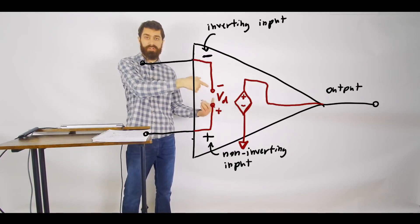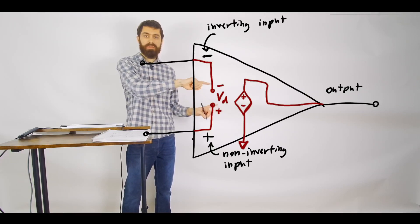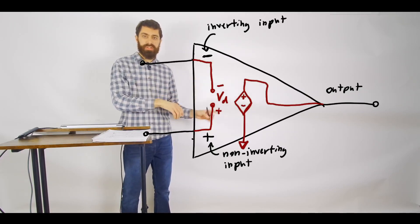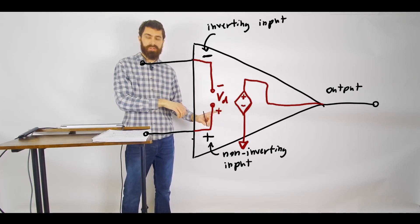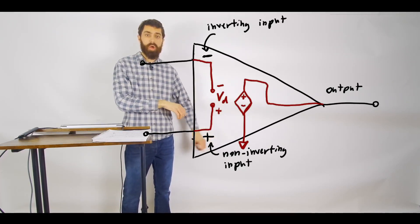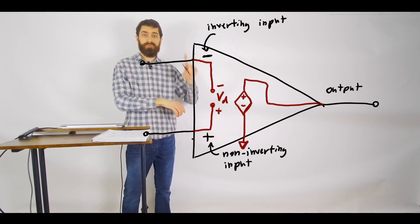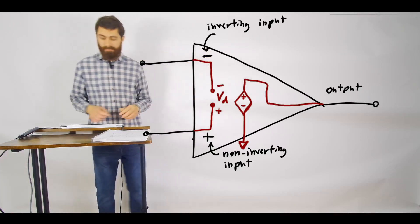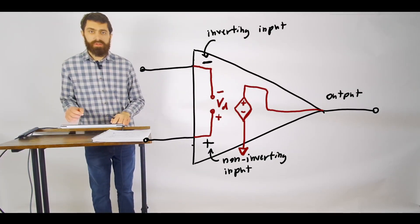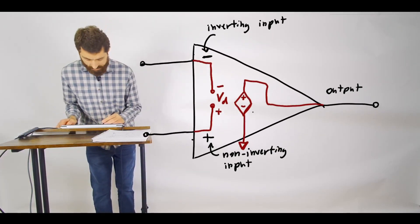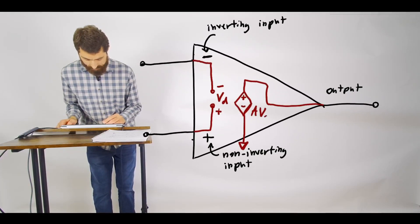And this plus and minus is actually referring to a voltage. It's a voltage across this open circuit here. And you always, whenever you're sketching this out, you always put the plus with the plus on the non-inverting input and the minus with the minus on the non-inverting input.